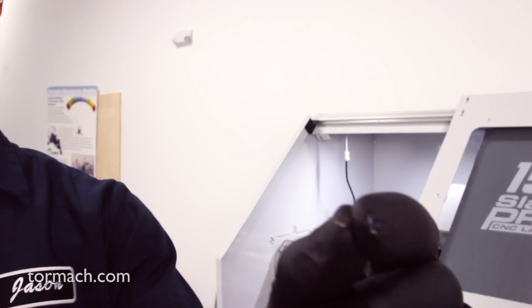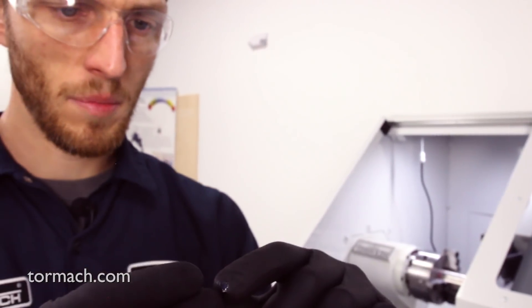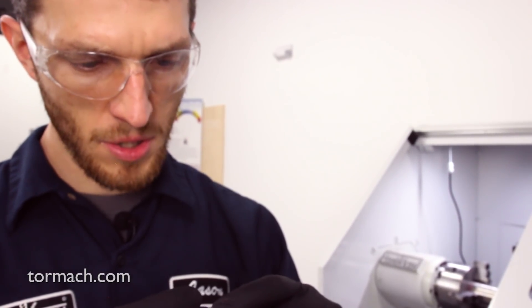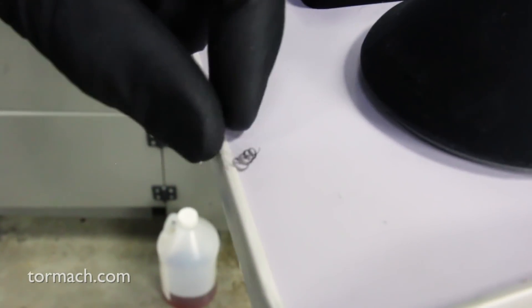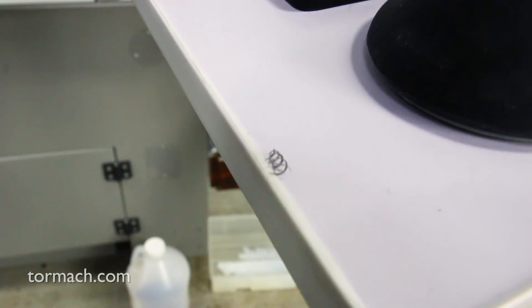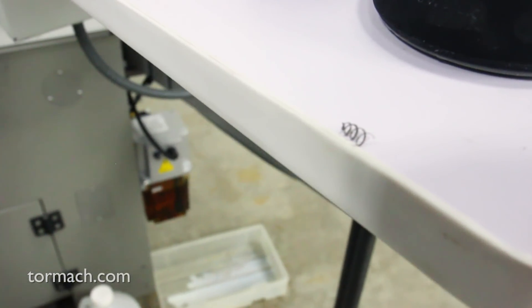So you can see with our chip we've got this nice little curly chip, it's still the same color as the material, so we didn't put enough heat in to turn it brown. 200 surface footage seems like a conservative value. We could go ahead and try to bump that up and see at what point we start getting this to turn colors.